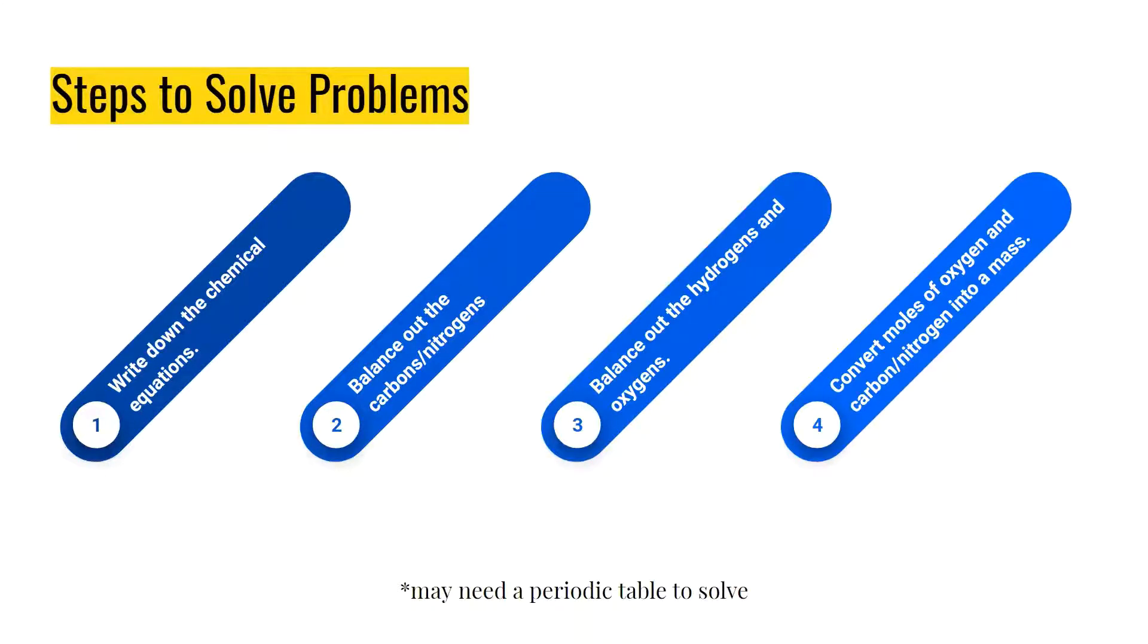Let's go over some steps on how to solve these types of problems first. First step, write down the chemical equations, depending on which one you're trying to solve for, the CBOD or the NBOD. Next, you're going to balance out the carbons or the nitrogens. In the third step, you're going to balance out the hydrogens and then the oxygens. In the fourth step, you'll convert moles of oxygen and carbon nitrogens into mass. It sounds confusing right now, but it'll make more sense once we go over some examples. And it's also a good idea to have a periodic table, because it will really help you with step number four.